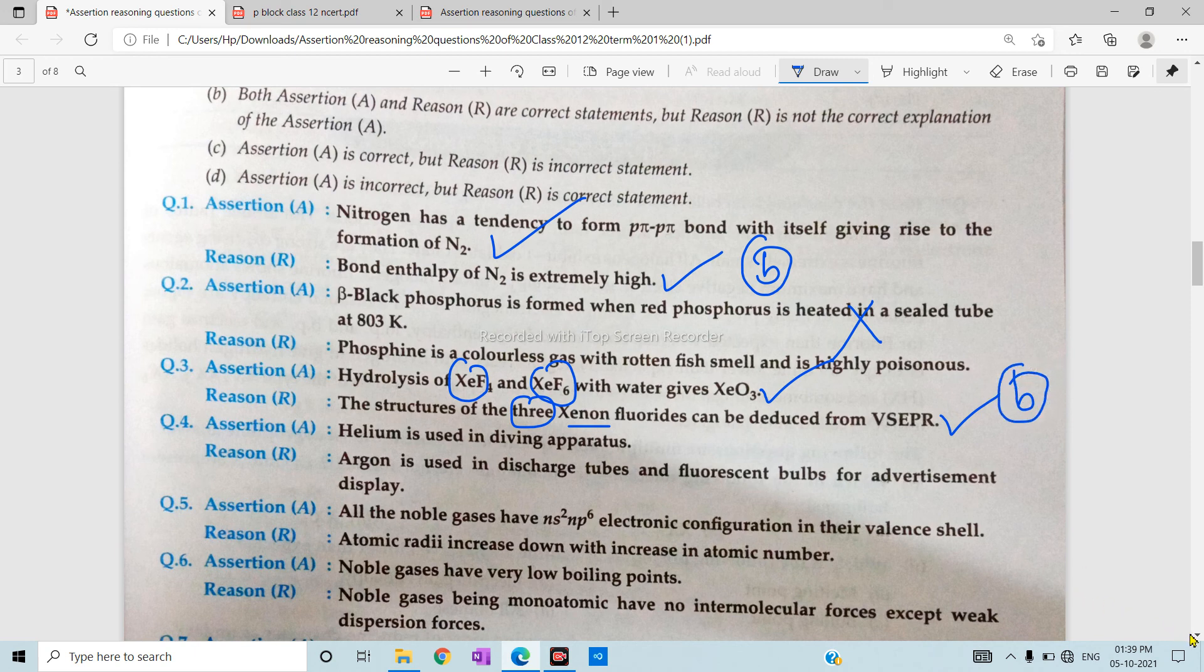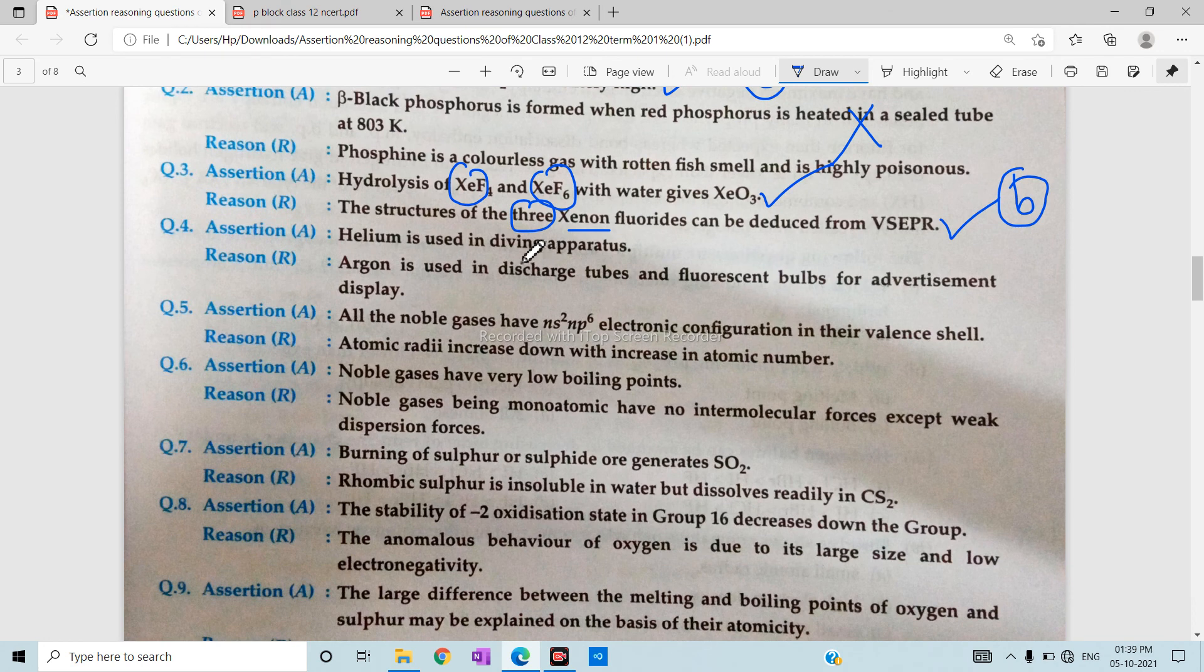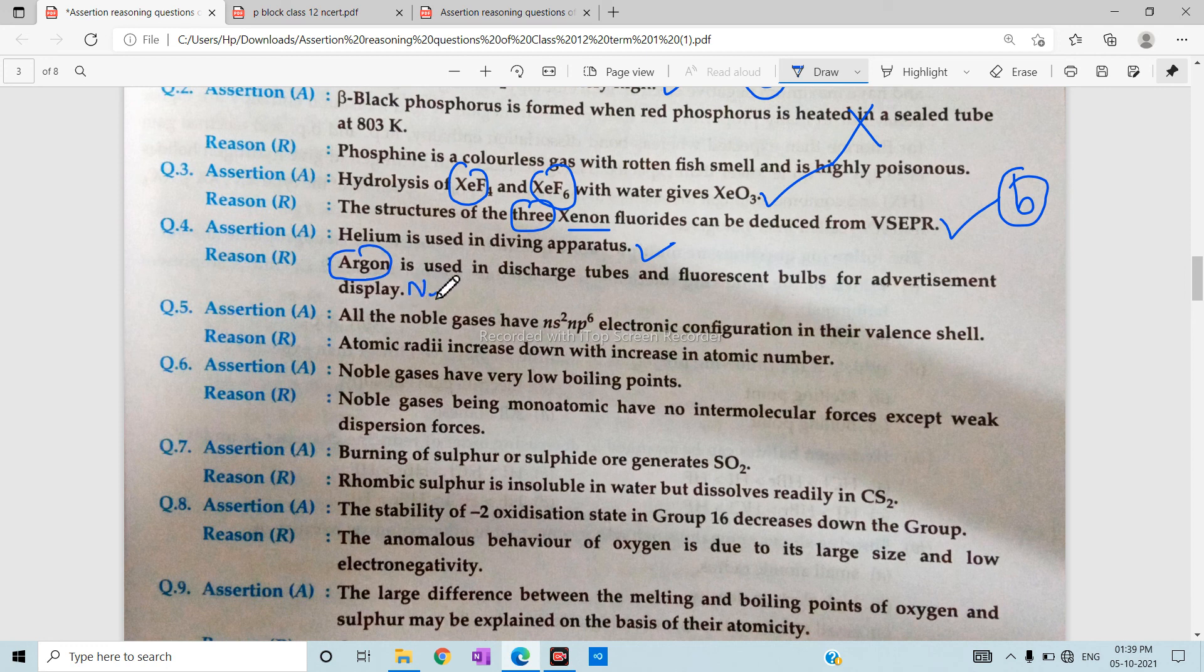Helium is used in diving apparatus. This is a correct statement. Argon is not used in diving apparatus, it is used in discharge tubes and fluorescent bulbs. So the answer is C.